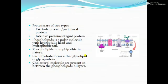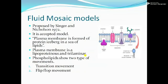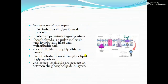So the Fluid Mosaic Model says that the plasma membrane is fluid in nature — protein iceberg in a sea of lipid. If there is a question about who proposed it: Singer and Nicholson. It is an accepted model, trilaminar, and follows the lipid-protein-lipid concept. Proteins are of two types: extrinsic or peripheral protein, and intrinsic or integral protein. The phospholipid shows polarity and is amphiphatic in nature. Carbohydrates are also present in two forms: either glycolipid or glycoprotein. Cholesterol is also present in between the phospholipid layers.